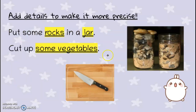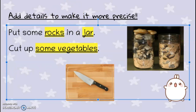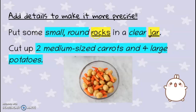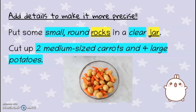Now let's try to practice adding details to make these sentences more precise. Try to add more details to words such as rocks, jar, and vegetables. Pause here and let me know how we can make them more precise — what adjectives can we use? I thought of something like: instead of "put some rocks in a jar," say "put some small round rocks in a clear jar" — a much more vivid picture. For the second example, "cut up some vegetables" — but what kind? If your dad said "cut up some vegetables," you'd ask what vegetables. But if he said "cut up two medium-sized carrots and four large potatoes," that's much more precise.